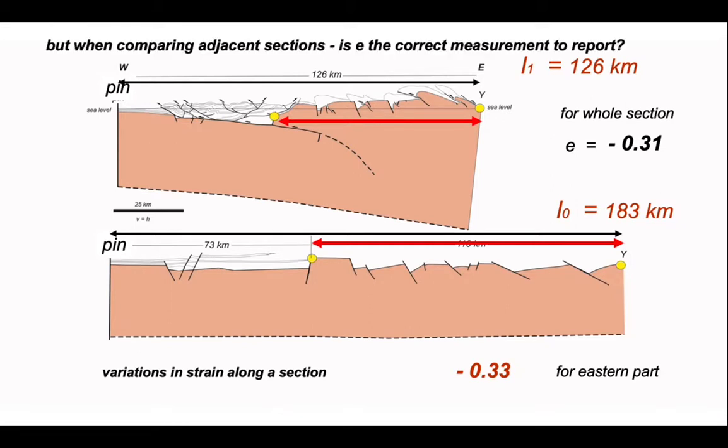But when comparing different areas, is E the correct measurement to report? It's very common in regional analyses for structural geologists to report variations in strain from one place to another in a mountain belt simply using elongation. We have to be really careful about that. The reason is because the place we set up as our reference points, the pin and the Y-point on here, are arbitrary.